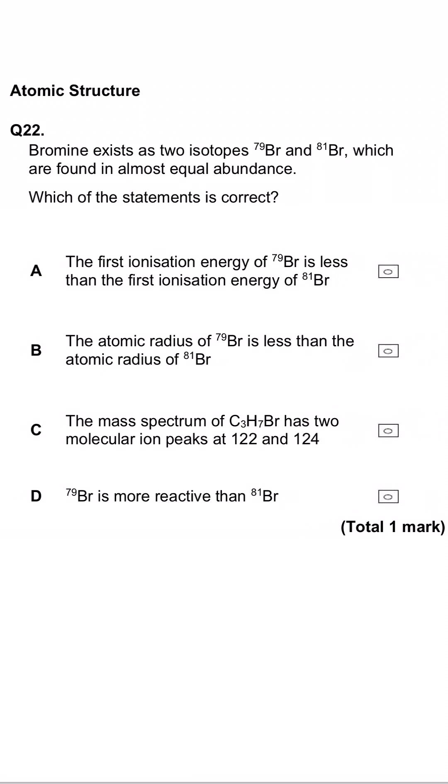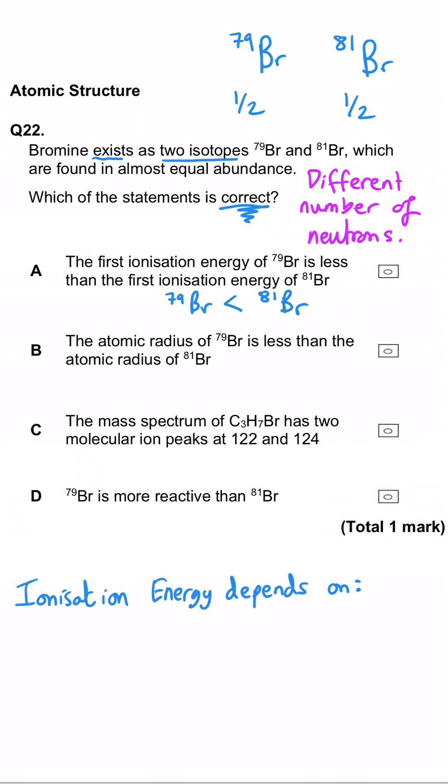This question is about the isotopes of bromine which are found in equal abundance and we're asked which statement is correct. The first one is about the ionization energy and it says it's less for the lighter isotope. That's not true. The only difference between these two isotopes is the number of neutrons and ionization energy depends on the nuclear charge and the atomic radius and the shielding, not the number of neutrons.